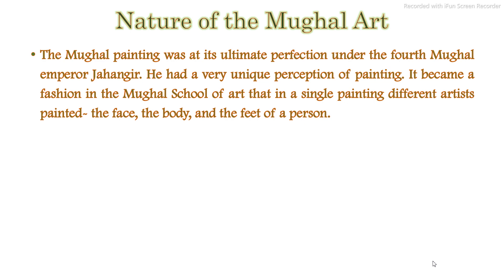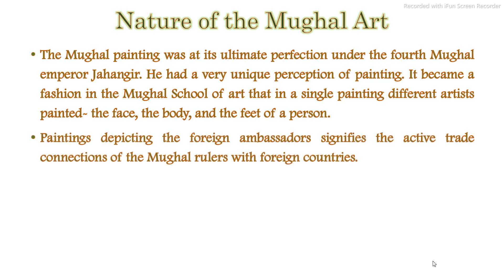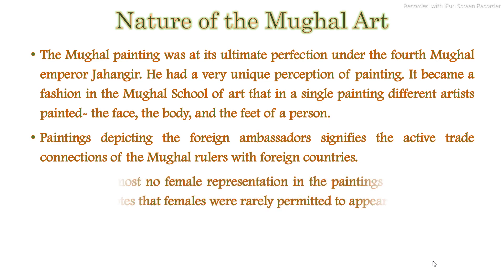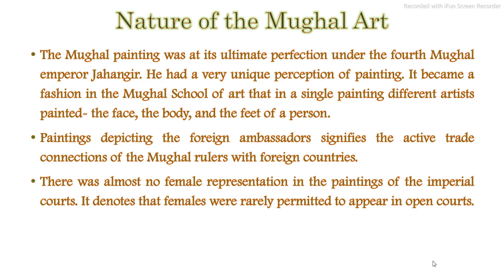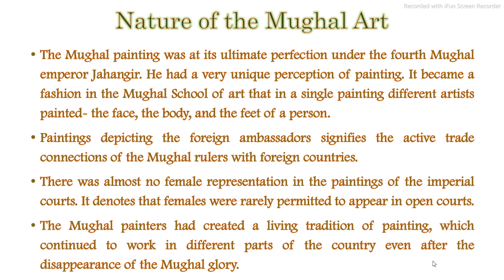The Mughal painting was at its ultimate perfection under the fourth Mughal emperor Jahangir. He had a very unique perception of painting. It became a fashion in the Mughal school of art during the reign of Jahangir that in a single painting, different artists painted the face, the body and the feet of a person. Paintings depicting foreign ambassadors signify the active trade connections of the Mughal rulers with foreign countries. There was almost no female representation in the paintings of the imperial courts, which denotes that females were rarely permitted to appear in open courts. The Mughal painters created a living tradition of painting which continued in different parts of the country even after the disappearance of Mughal glory.